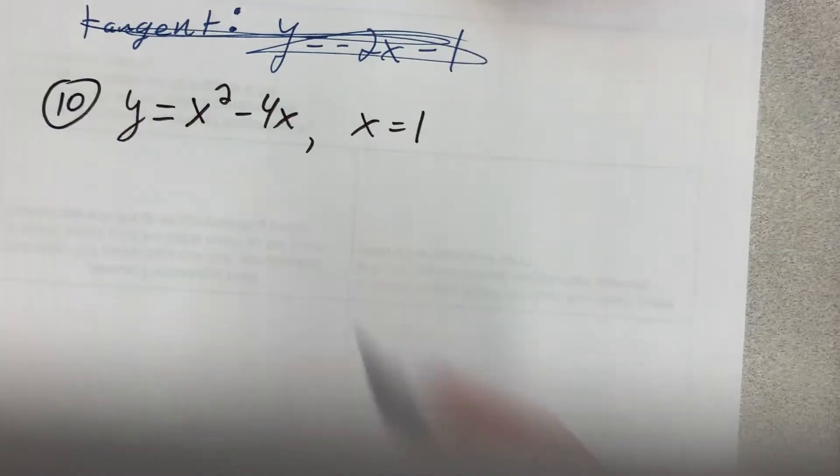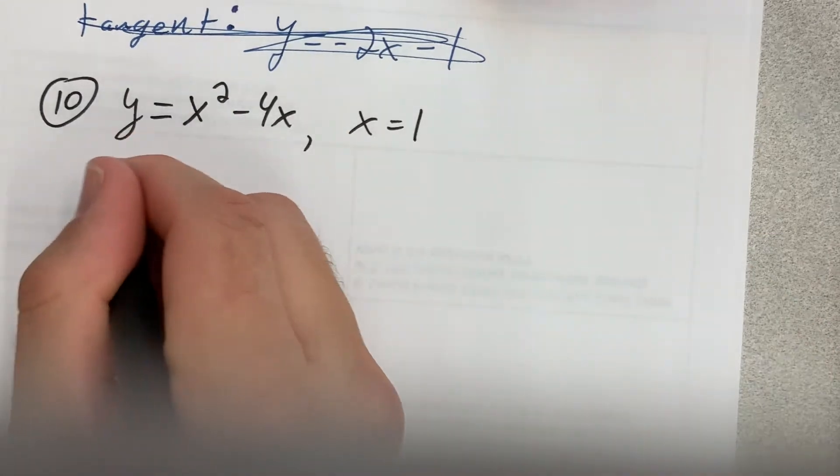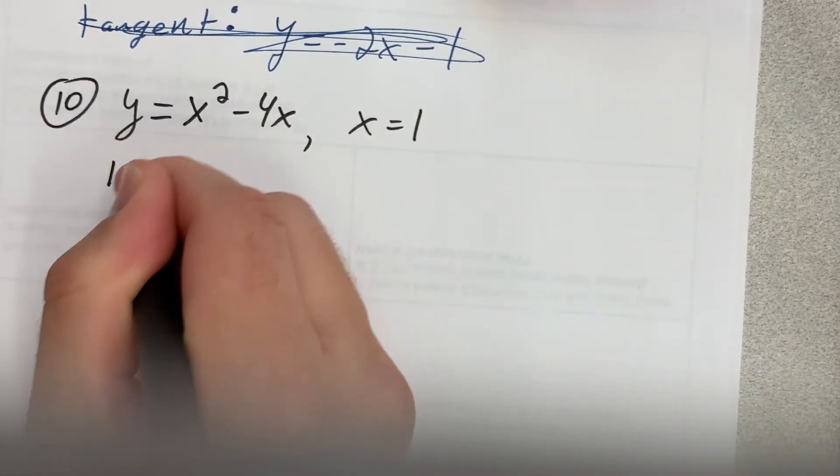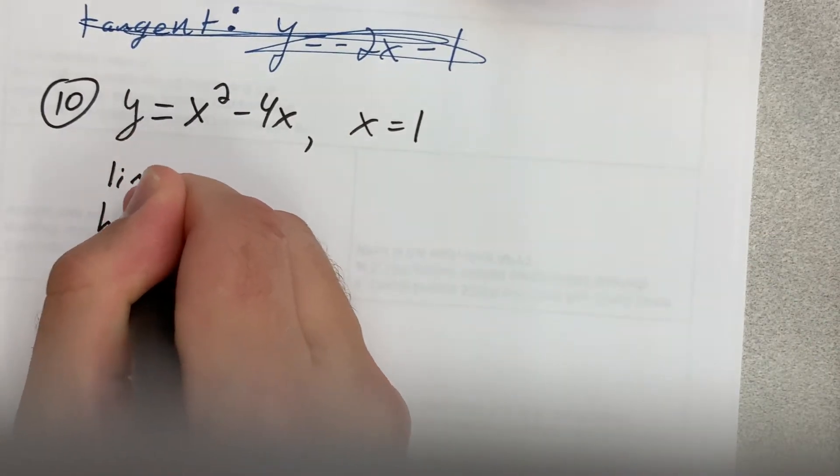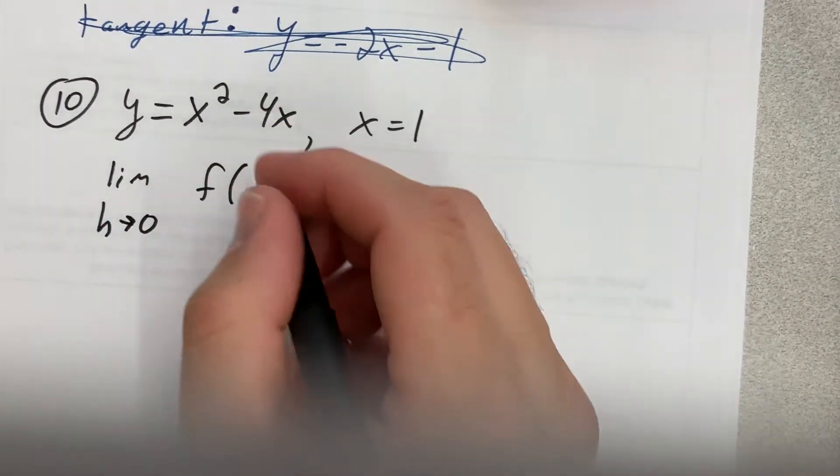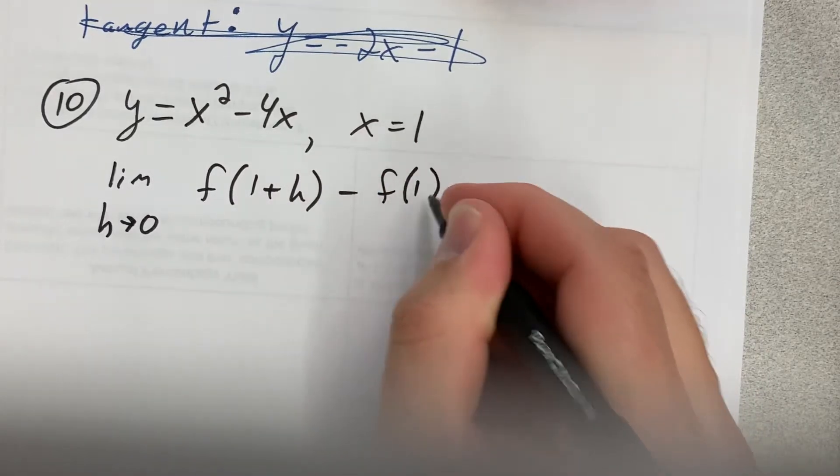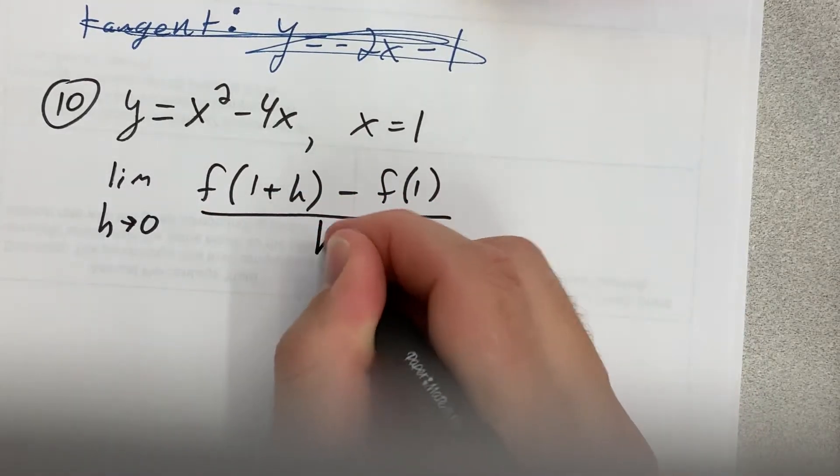What we'll do first is find the equation of the tangent line. To do that, remember, we need this: the limit as h approaches 0 of f of a plus h. Well, a is 1 here, so f of 1 plus h minus f of a, so minus f of 1, all divided by h.